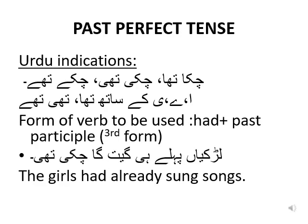Moving on to the last tense — past perfect tense. Just like present perfect, there are two indications: 'chuka tha', 'chuki thi', 'chuke thay', or alif badi/choti with 'tha', 'thi', or 'the'. The verb form used is the past participle, and with it you use 'had'. 'Latkiaan pehle hi geet ka chuki thi' translates as 'the girls had already sung songs', where 'sung' is the past participle and 'had' is the helping verb.